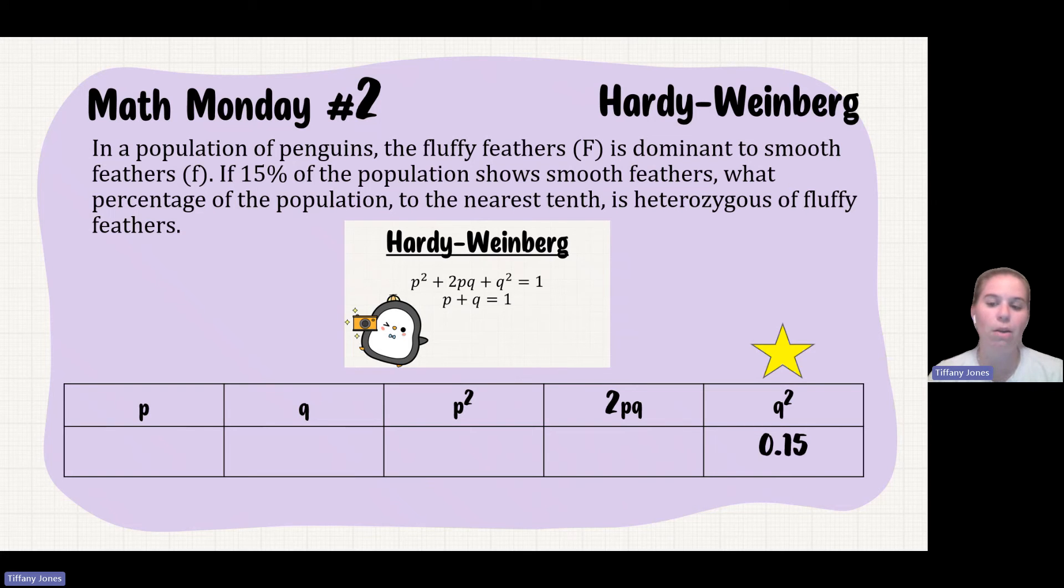Well, if I know Q², I can solve for the Q. The way to get Q, I take the square root of Q². So the square root of 0.15 will give me 0.387.